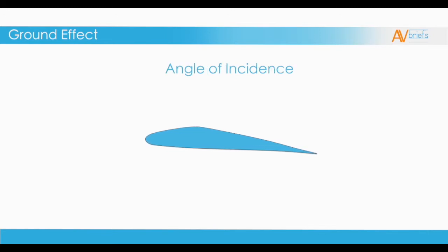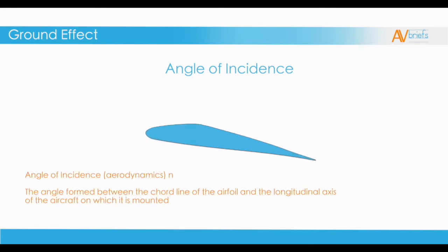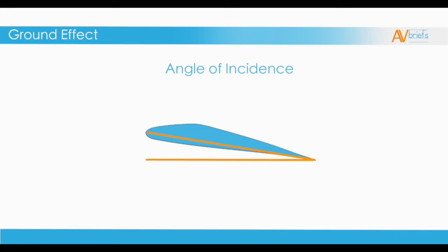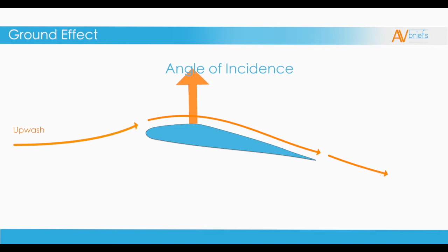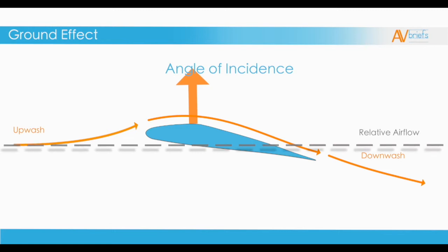An angle of incidence is the angle formed between the cord line of the airfoil and the longitudinal axis of the aircraft on which it is mounted. Here we have the cord line between the leading edge and the trailing edge. There's also another reference line parallel with the horizon. The angle created between these two lines is known as the angle of incidence — it's the angle of attack of the wing when the airplane is on level ground, typically around 4 degrees. One of the effects of this angle of incidence is that the relative airflow has to wash up and over the leading edge, then continues over the wing creating lift and on down the trailing edge. Newton's third law states that for every action there's an equal and opposite reaction. The reaction we get from the upwash is downwash at the trailing edge.